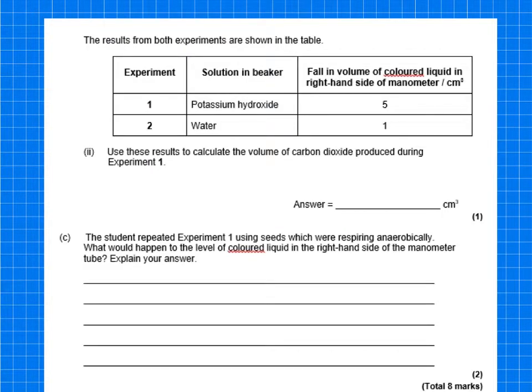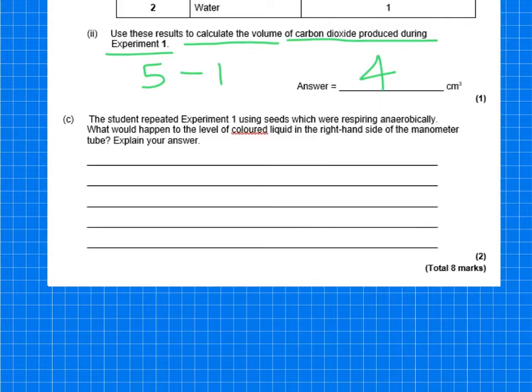They'll then show you some results from both experiments. And it talks about the fall in volume of the coloured liquid in the right-hand side between potassium hydroxide and water. It says calculate the volume of carbon dioxide produced during experiment 1. Well, luckily, they measured the actual scale is in the centimetres cubed. So it's quite simple. You just do 5 centimetres cubed minus the 1. So that would mean that 4 centimetres cubed is produced.